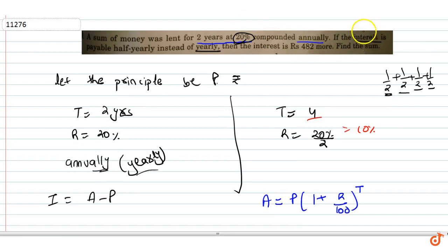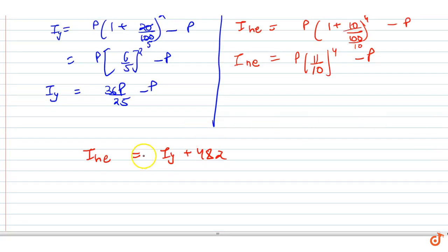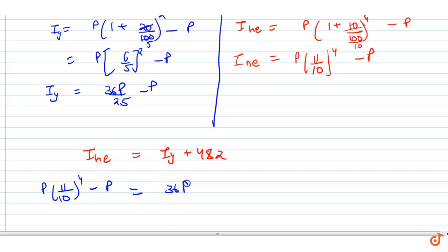The question says: if interest is payable half-yearly instead of yearly, the interest is 482 more. So the condition is: Interest half-yearly = Interest yearly + 482. That gives us: P × (11/10)^4 − P = 36P/25 − P + 482.